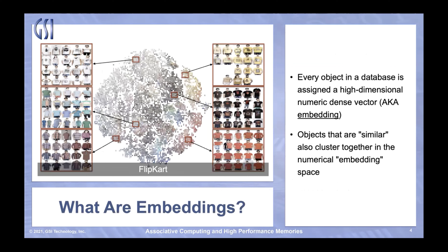We're going to digress a little bit and talk about embeddings, which is fast becoming the standard for numerically representing unstructured data like images. Here's an instructive visual example — a graphic from a paper by Flipkart depicting a small portion of their product catalog. Each image at the periphery is a picture of a product — in this case, shirts. Each image is assigned a numeric vector, which you can think of as a coordinate in a high-dimensional vector space. Products that appear visually similar cluster together in the numeric vector space, depicted as a blob in the middle. This blob is sometimes called an embedding space, and individual points are those embeddings, those vectors.